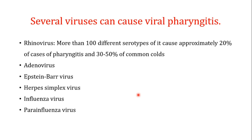The most common viruses responsible for viral pharyngitis are rhinoviruses, with more than 100 different serotypes causing approximately 20 percent of pharyngitis cases and 30 to 50 percent of common cold cases. Viral pharyngitis can also be caused by adenoviruses, the Epstein-Barr virus, herpes simplex virus, influenza, and parainfluenza viruses.